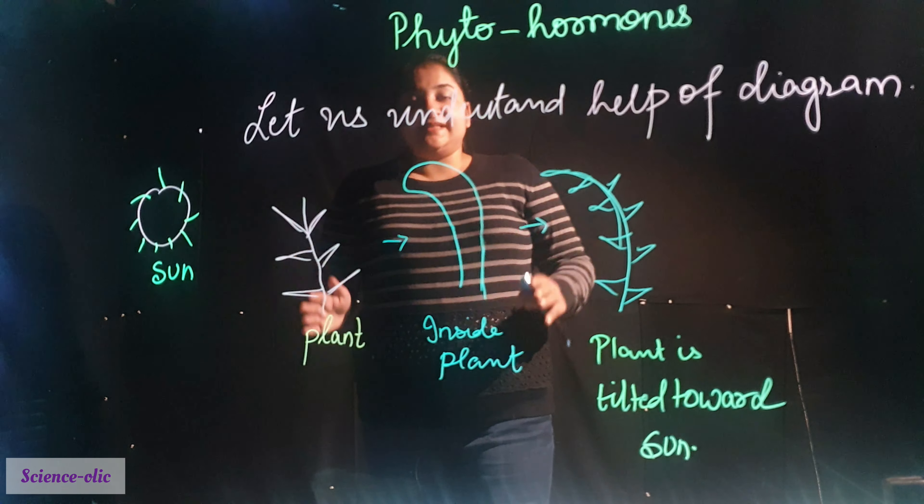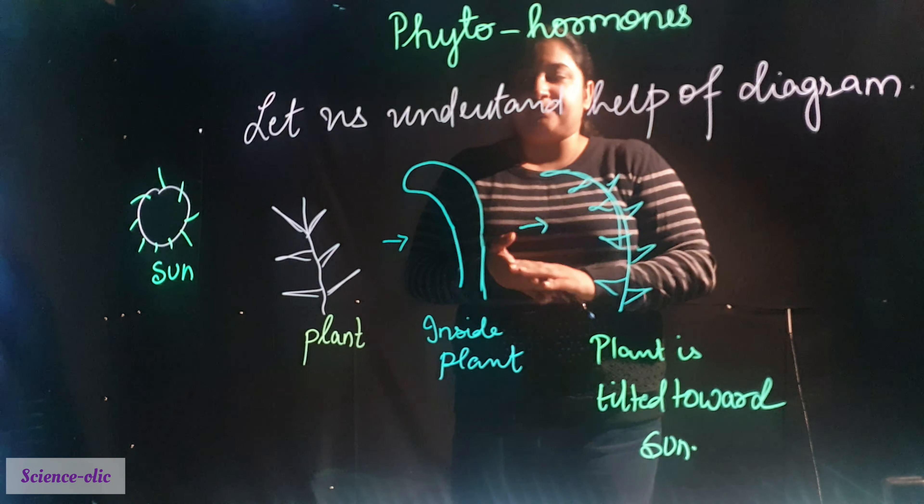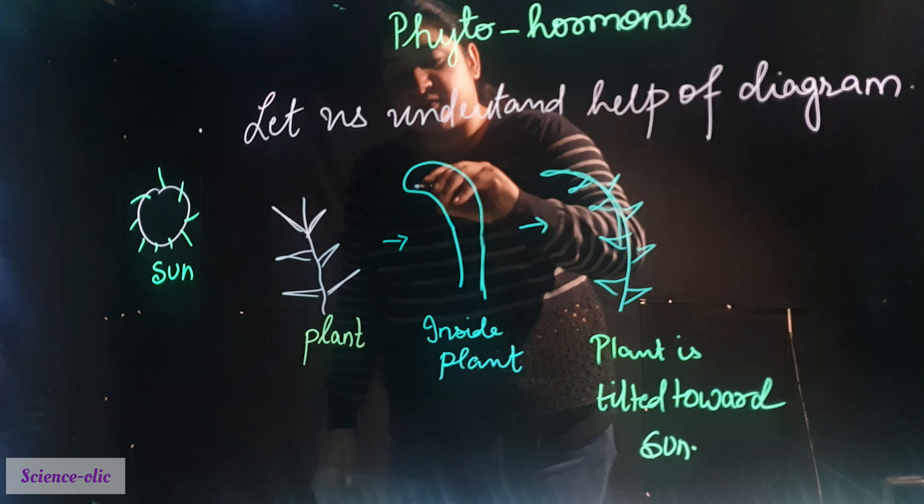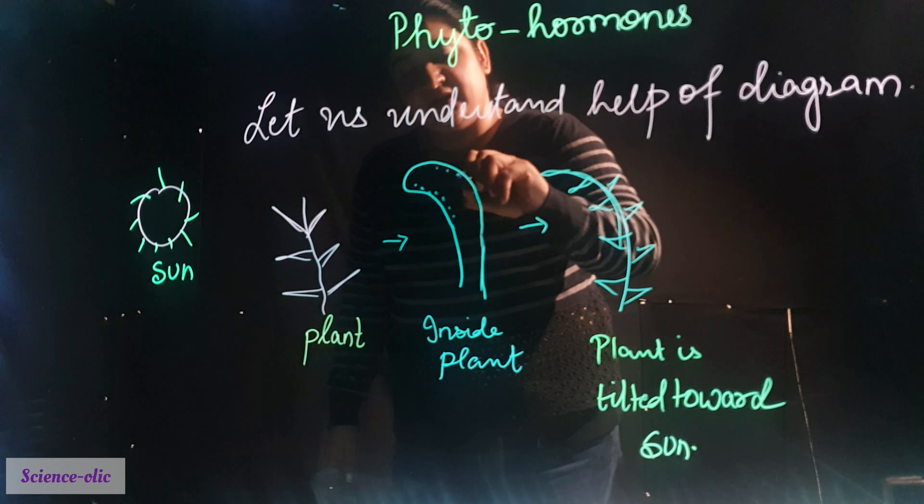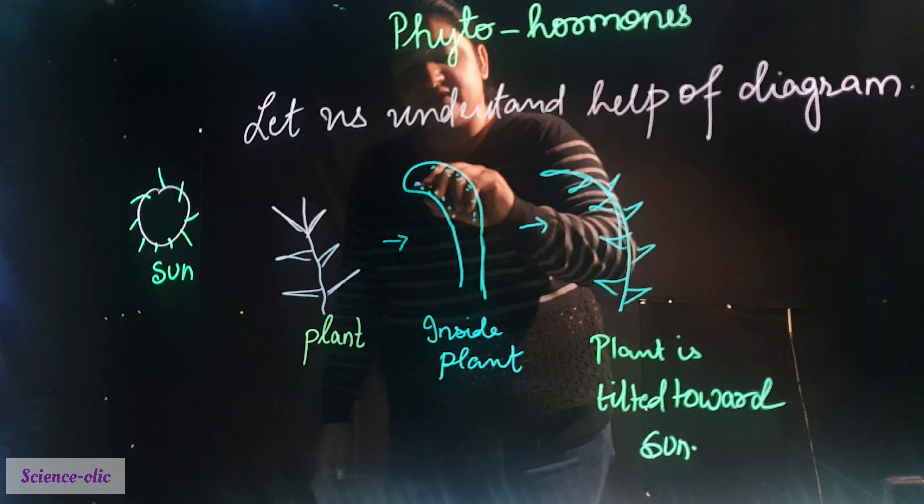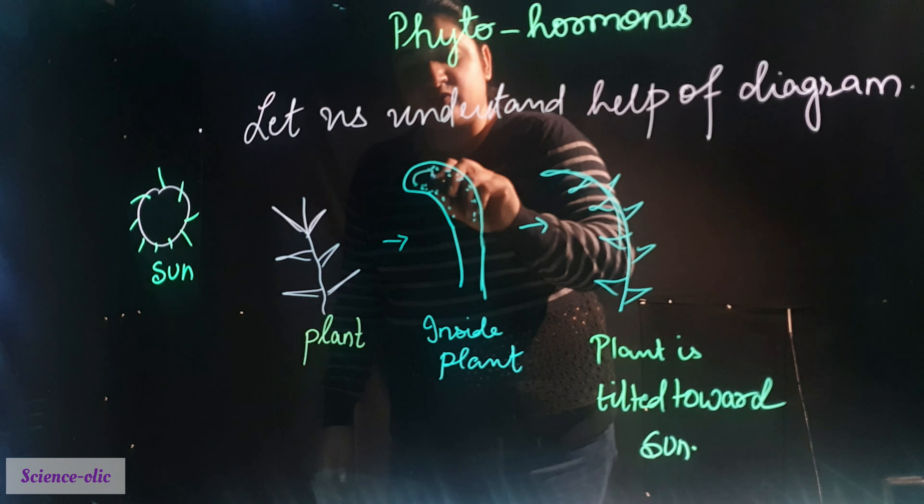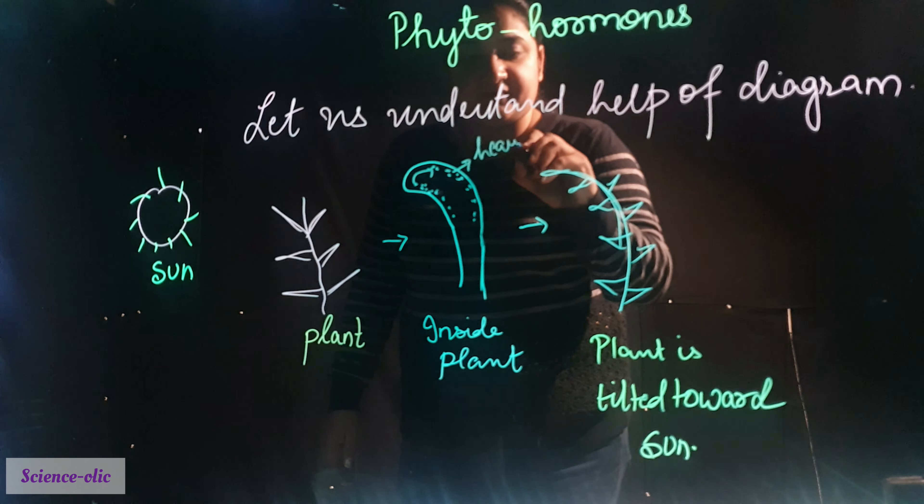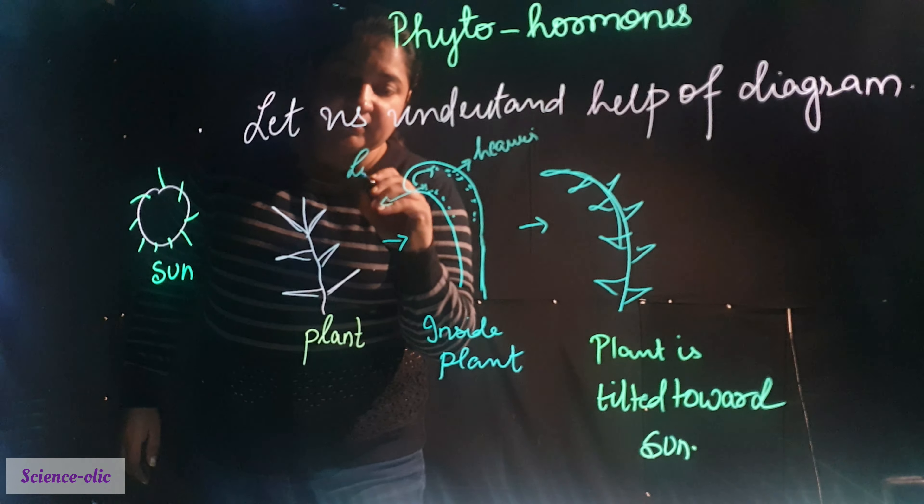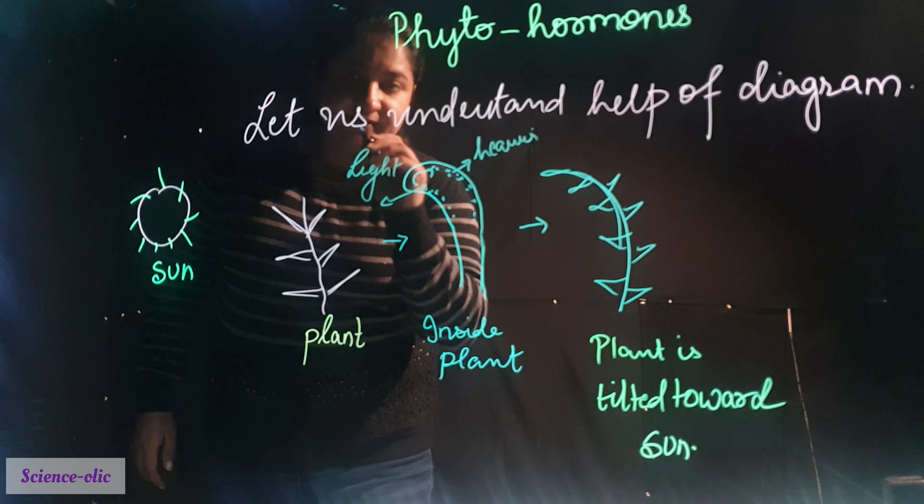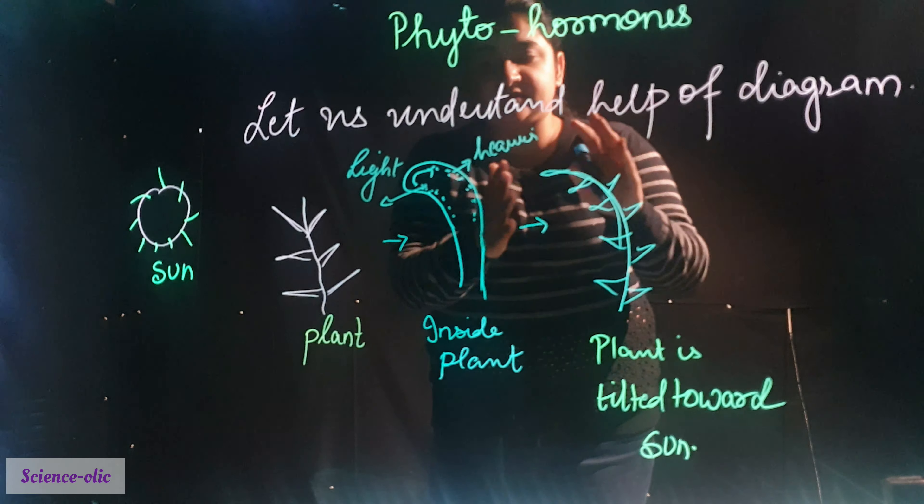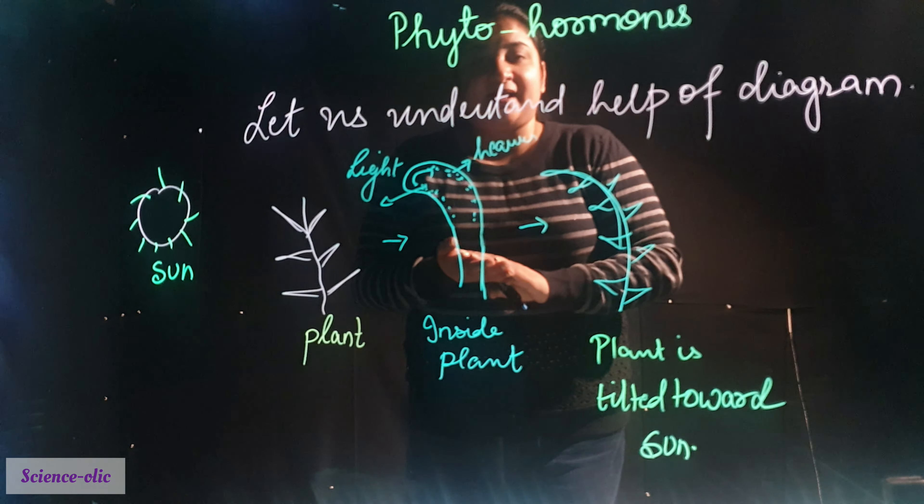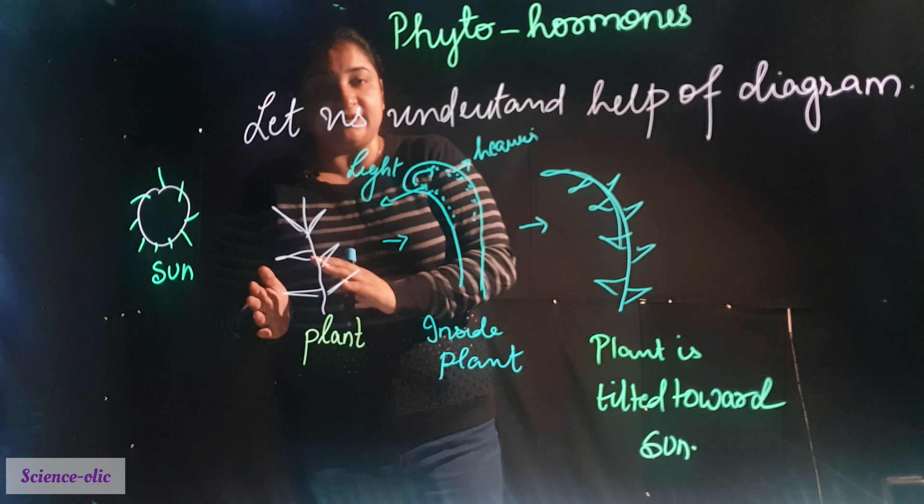Let's understand it with the help of diagram. The sun rays fall upon the plant, and the auxins which first were present this side move to the other side. First the auxins were present here, now it has moved to the opposite side. Now this side becomes the heavier and this side becomes light. Now the plant tilts towards the lighter side, towards the sun. This helps the plant to tilt towards the sun.